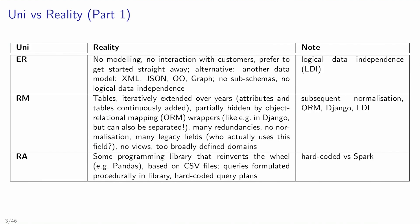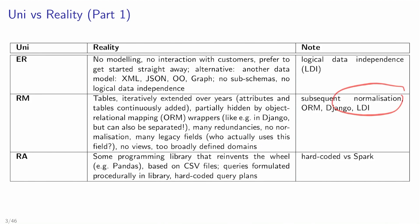For example, in a master application system where people enter the university where they got their degree, you might make it a free-text string. That leads to the problem that people write the same university in various spellings — Saarbrücken University, Saarland University, Saarland U, University of the Saarland, UDS — all meaning the same thing. A better approach is to create a separate table for universities with a foreign key relationship and have people pick from a dropdown list. These are the kinds of decisions that can be made during modeling.